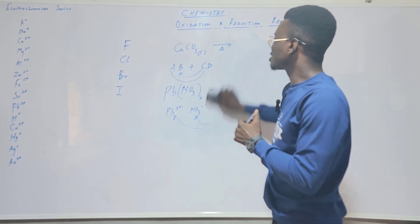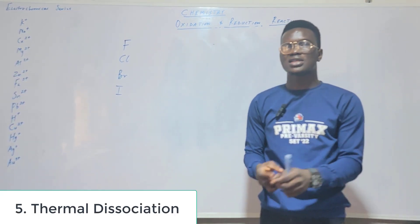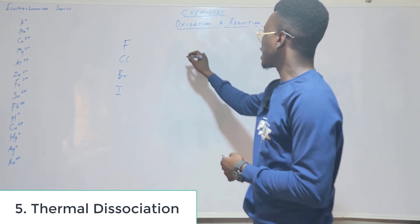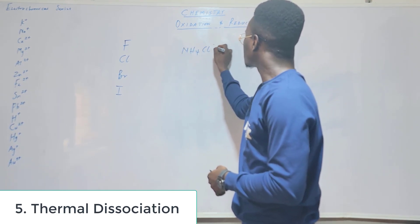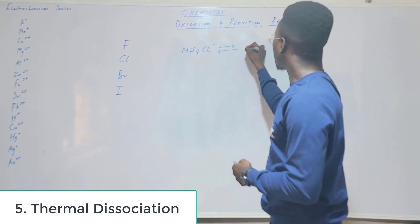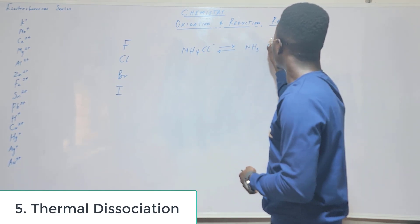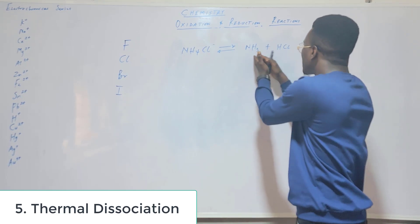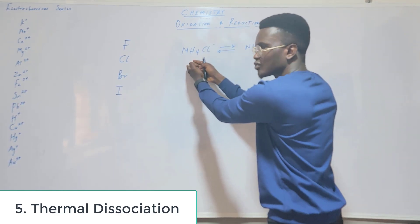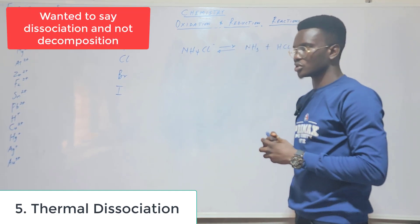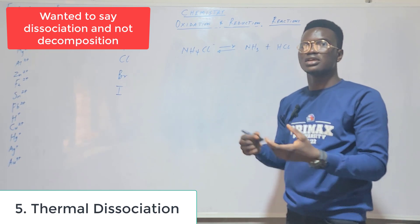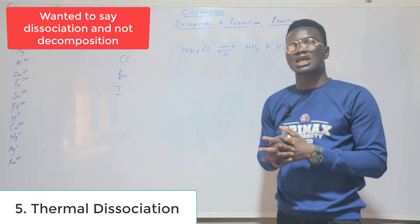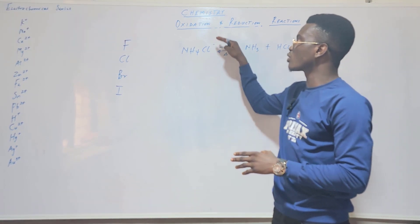There is also thermal dissociation — a reversible thermal decomposition. For example, ammonium chloride (NH₄Cl) can reversibly decompose to give ammonia (NH₃) and HCl. The ammonia and HCl can also recombine to give NH₄Cl. This is called thermal dissociation because the decomposition is reversible and requires heat.